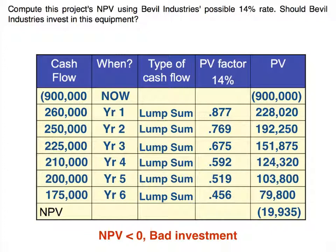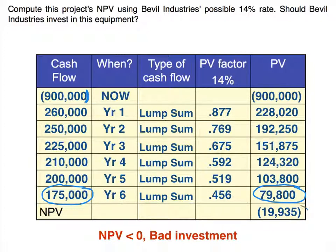We still have our capital outlay of $900,000, worth $900,000 today. Years one through six have lump sum amounts coming in at different times, so we go to the present value of lump sum table. At 14%, year one has a factor of 0.877, year two is 0.769, and so forth down the column. For example, this tells us we would need $79,800 today to end up with $175,000 at 14% in six years. When we do this, we find a negative net present value — meaning this is a bad investment and we're not getting anywhere near our required rate of return.